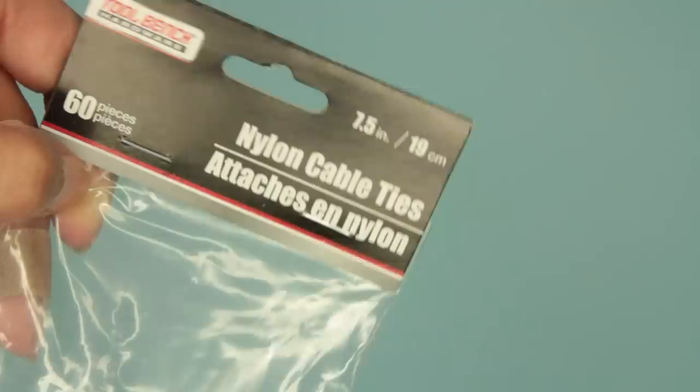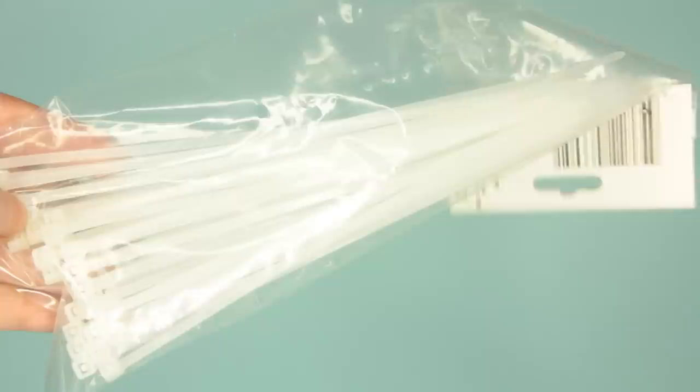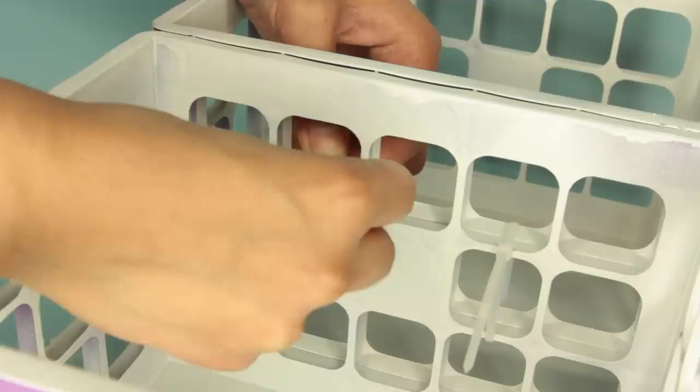To attach the crates together, I'll be using zip ties. You'll attach a row of crates together. I attach three crates together using two zip ties to hold each crate together. As you can see, these crates I'm using were previously painted white.